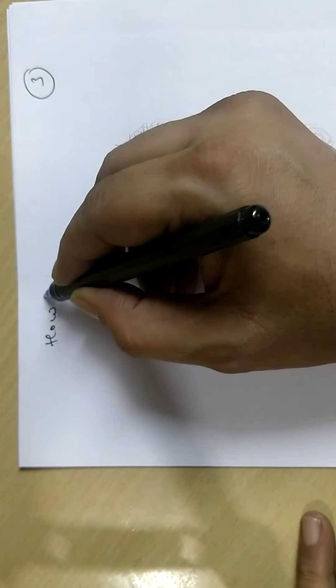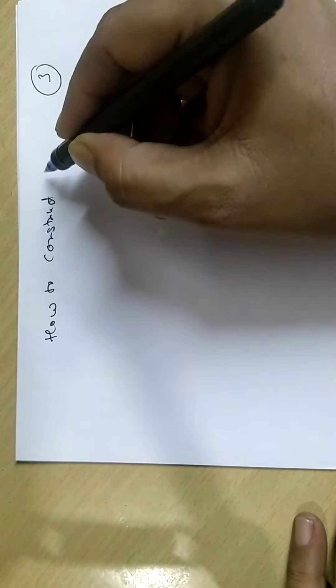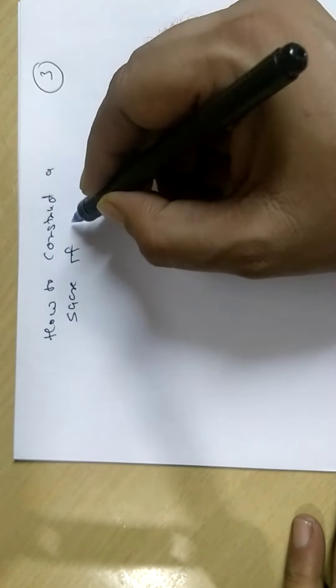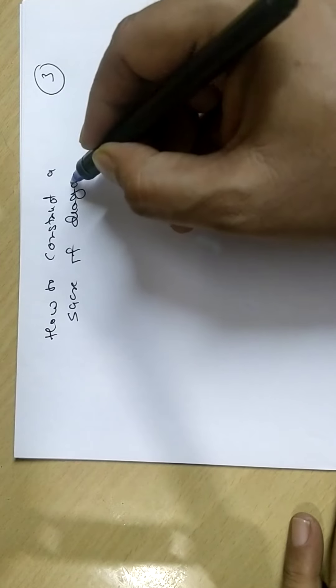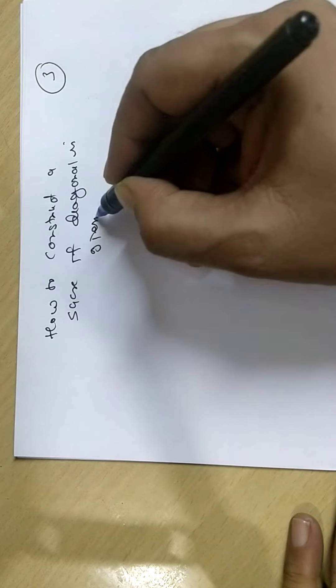How to construct a square if diagonal is given.